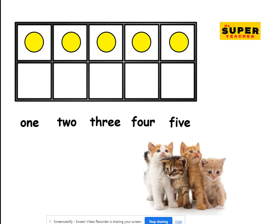There are one, two, three, four, four cats. Now can you circle four? Can you circle the word that spells four? Oh, great! Four, four. Well done.